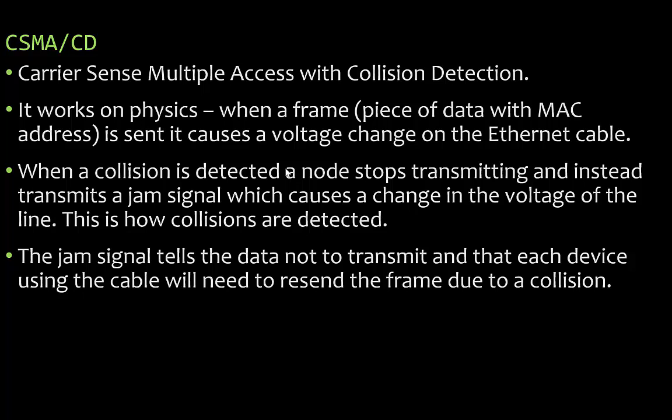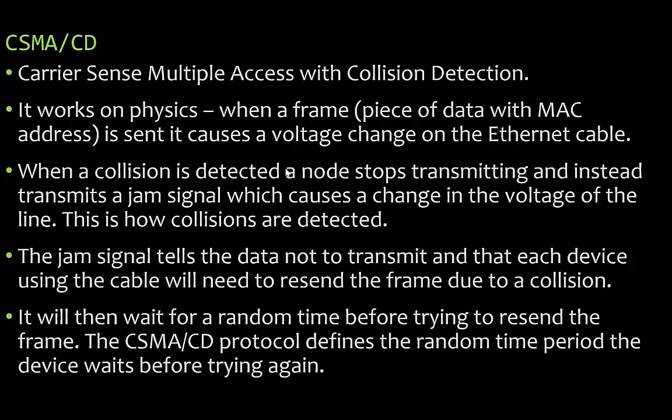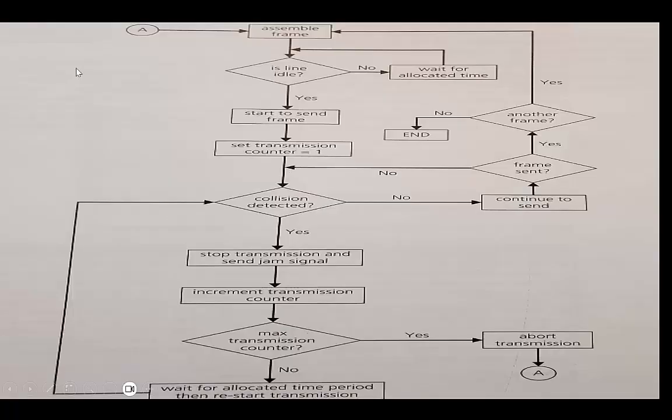CSMA/CD works on physics. When a frame — a piece of data with a MAC address — is sent, it causes a voltage change on the ethernet cable. When a collision is detected, a node will stop transmitting and instead transmit a jam signal, which causes a change in the voltage of the line — this is how collisions are detected. The jam signal tells devices not to transmit. Each device will then wait for a random amount of time before trying to resend the frame, making it highly unlikely both devices will resend at the same time.